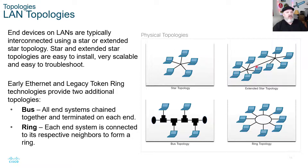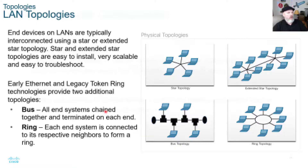An extended star topology may have two routers or two switches connected to each other, with end devices off of those. Bus topologies and ring topologies also existed but are not commonly used anymore.